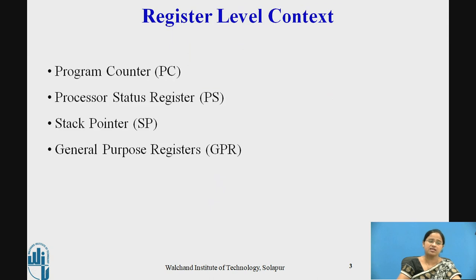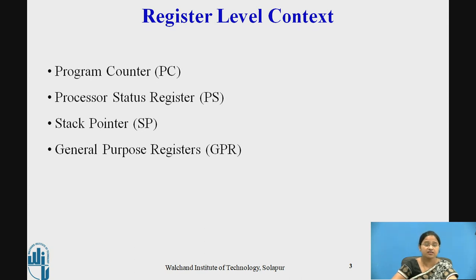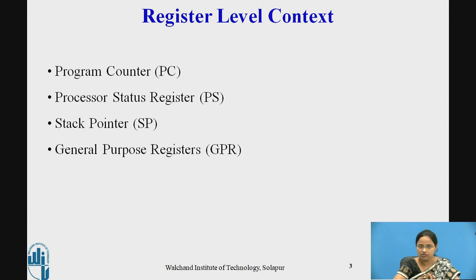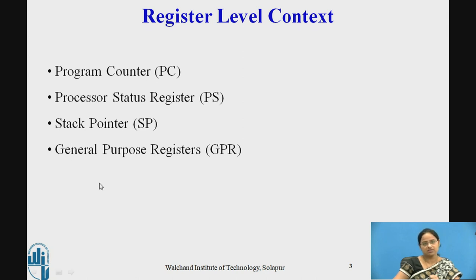Register level context contains the program counter register, which stores the information of the instruction to be executed next. Processor status register gives machine level information about the process. Stack pointer always points to the current location in the stack — if the process is executing in user mode, the stack pointer points to the user stack; if in kernel mode, it points to the kernel stack. General purpose registers are always used by the process whenever it is executing. All these form the register level context.